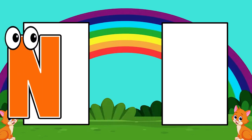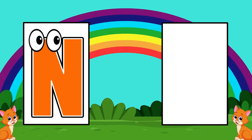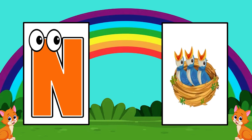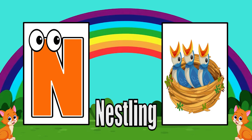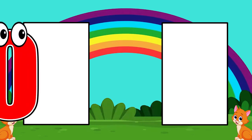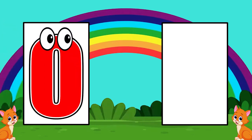L is for leaf. M is for mushroom. M is for nestling.